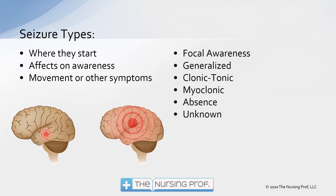Seizure types are going to be dependent upon where they start. We label them by the effects they have on awareness and by the symptoms. There's a list of different kinds of seizures, and this list may be a little different than what you learned in the past because there have been changes in the way we label seizures — moving away from terms like petite mal and grand mal clonic-tonic seizure.